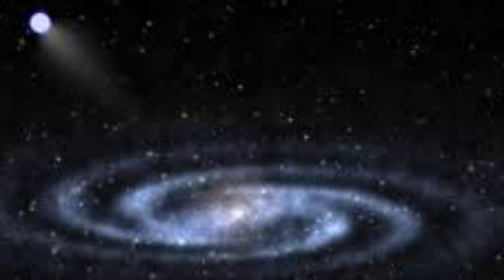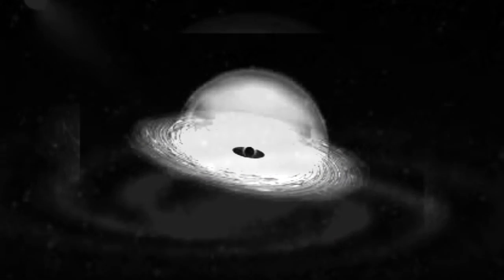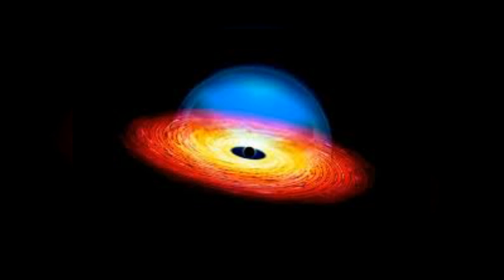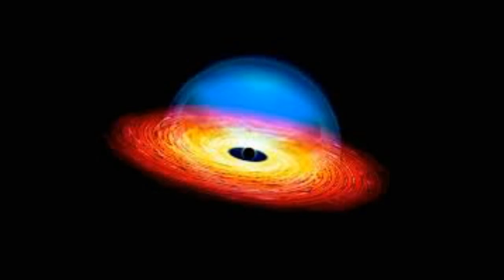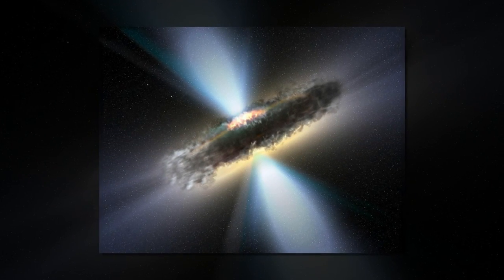Like a pair of whirling skaters, the black hole duo generates tremendous amounts of energy that makes the core of the host galaxy outshine the glow of the galaxy's population of billions of stars, which scientists then identify as quasars.